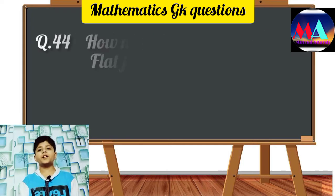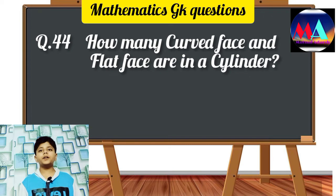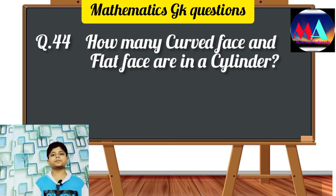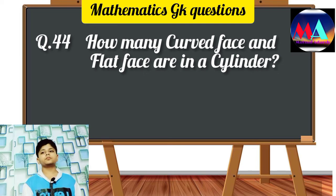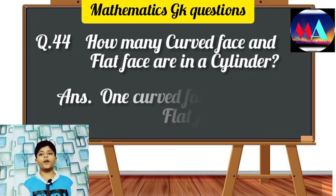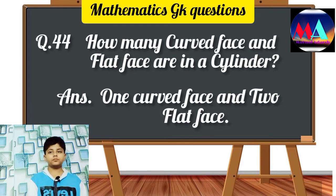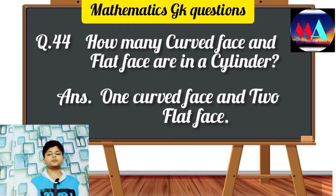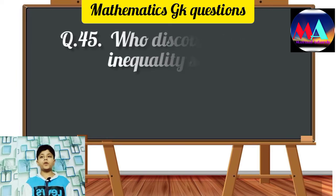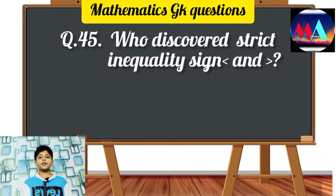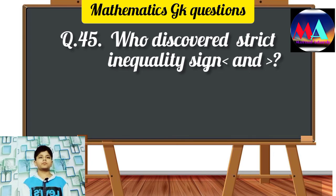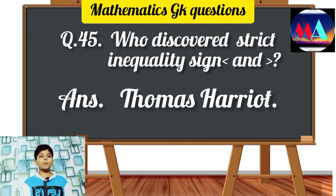Question number 44: How many curved faces and flat faces are there in a cylinder? Answer: 1 curved face and 2 flat faces. Question number 45: Who discovered strict inequality signs? Answer: Thomas Harriot.